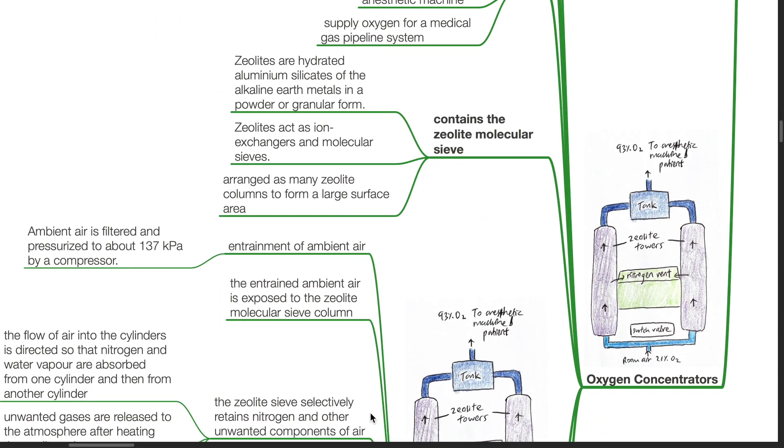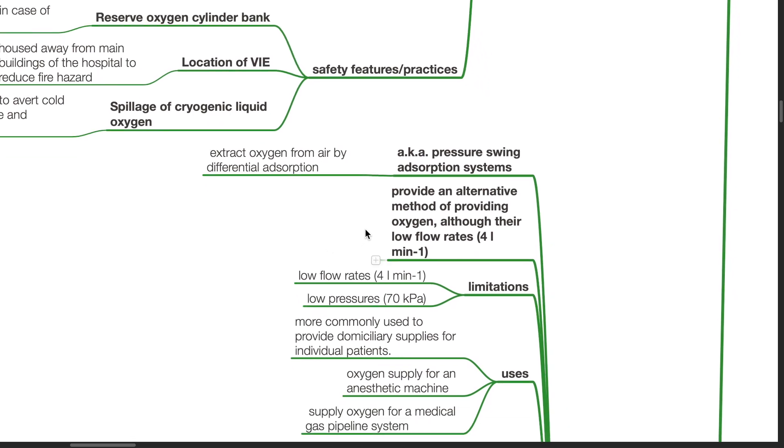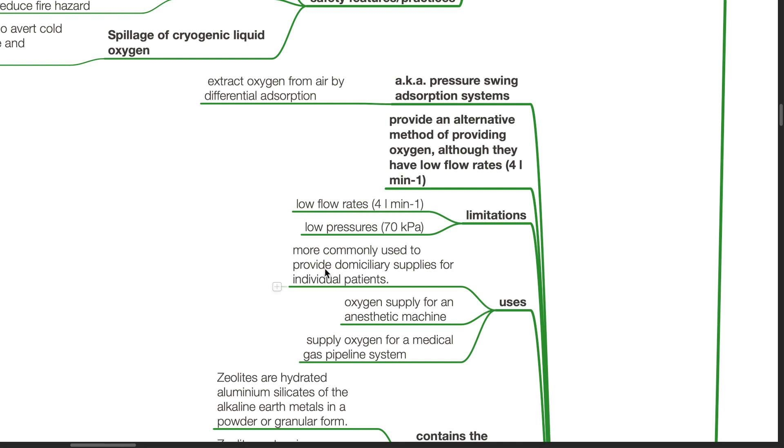Oxygen concentrators, also known as pressure swing adsorption systems, extract oxygen from air by differential adsorption. These provide an alternative method of providing oxygen. Limitations include low flow rates of 4 liters per minute and low pressures of 70 kPa. Uses include for domiciliary supply for individual patients, oxygen supply for an anesthetic machine, and to supply oxygen for a medical gas pipeline system.